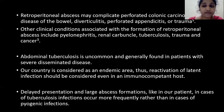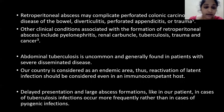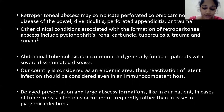Retroperitoneal abscess may complicate perforated colonic carcinoma, Crohn's disease of the bowel, diverticulitis, perforated appendicitis, or trauma. Other clinical conditions associated with the formation of retroperitoneal abscess include pyelonephritis, renal carbuncle, tuberculosis, trauma, and cancer. Abdominal tuberculosis is uncommon and generally seen in patients with severe disseminated disease. Our country is considered an endemic area, and thus reactivation of latent infection should be considered even in an immunocompetent host. Delayed presentation and large abscess formation, as in our patient, occurs more frequently in cases of tuberculosis infection rather than in cases of pyogenic infections.